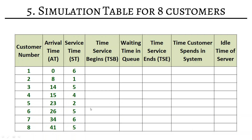Now let's simulate. We have 8 customers. Arrival time and service time have already been calculated. For customer 1, the arrival time is 0, the cashier is free, so service begins immediately at 0. Waiting time is 0. Service is provided for 6 minutes, so time service ends at 6. Time spent in system is 6 minutes. Idle time of the server is 0, since the cashier was busy.